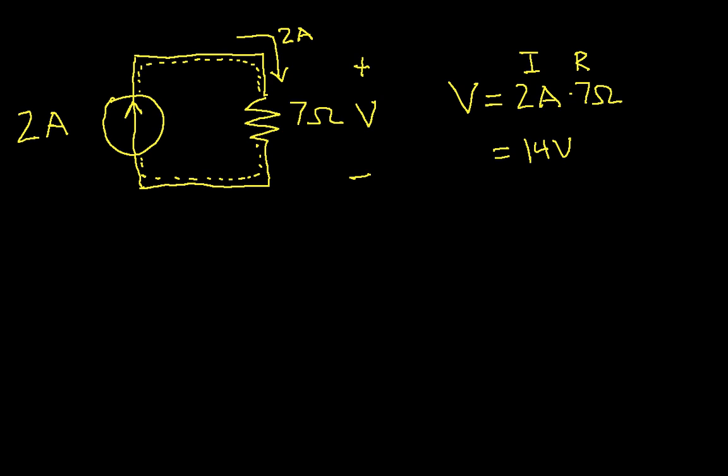So that basically says that across this resistor will be 14 volts. And what that means, in order for the current to be 2 amps through the resistor, what that means is that this current source is also going to have 14 volts across it. And again, the current source is going to do whatever it has to to make the current through that resistor be 2 amps. In this case, it has to have a voltage across itself of 14 volts. So that was a fun example.